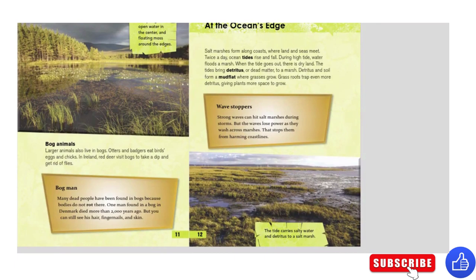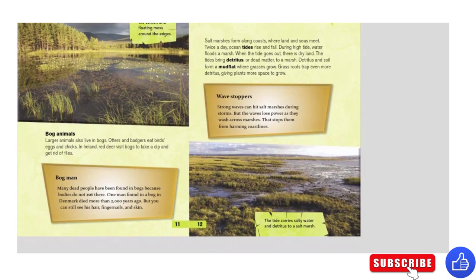At the ocean's edge. Salt marshes form along coasts where land and sea meet. Twice a day, ocean tides rise and fall. During high tide, water floods a marsh. When the tide goes out, there is dry land. The tides bring detritus — dead matter — to a marsh. Detritus in the soil forms a mudflat where grasses grow. Grassroots trap even more detritus, giving more plants more space to grow.